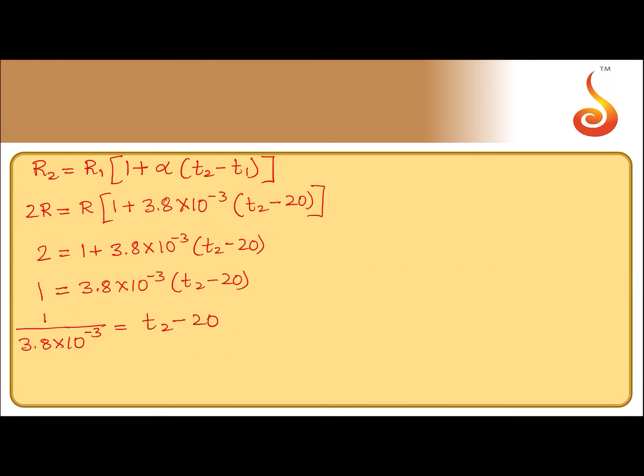This can be written as 10^-3. Taking it to the numerator gives 1000, so 1000 divided by 3.8 equals T2 - 20.